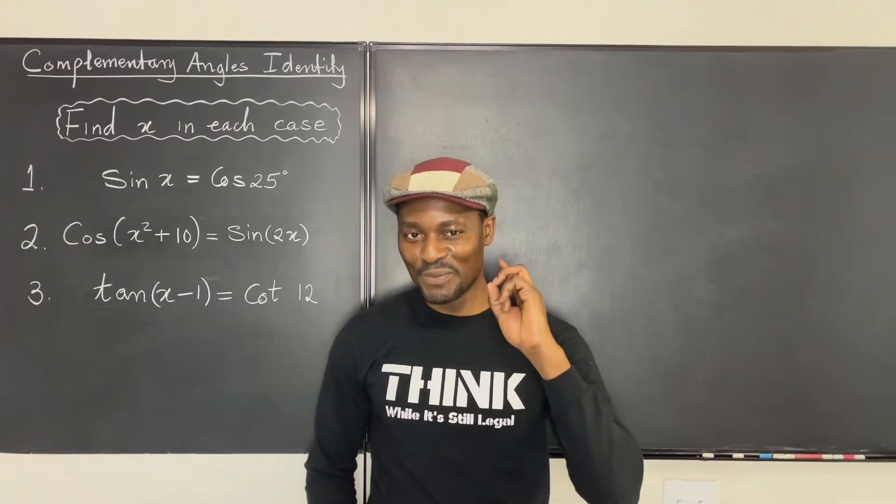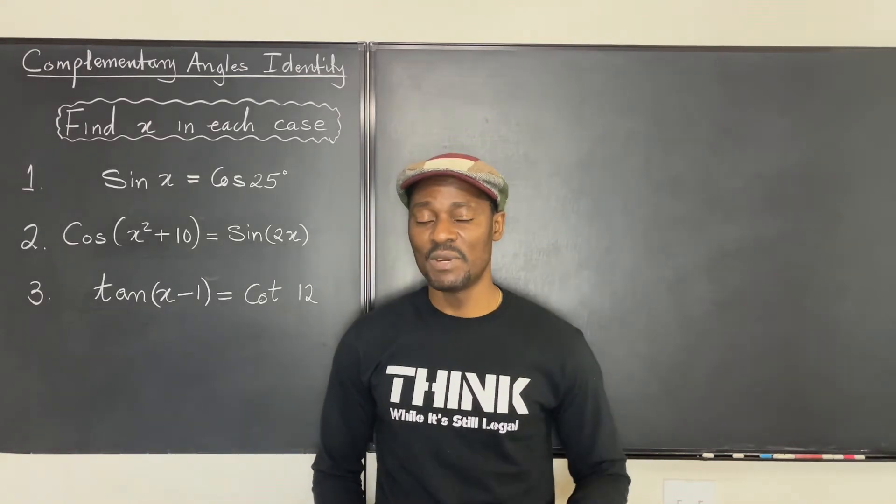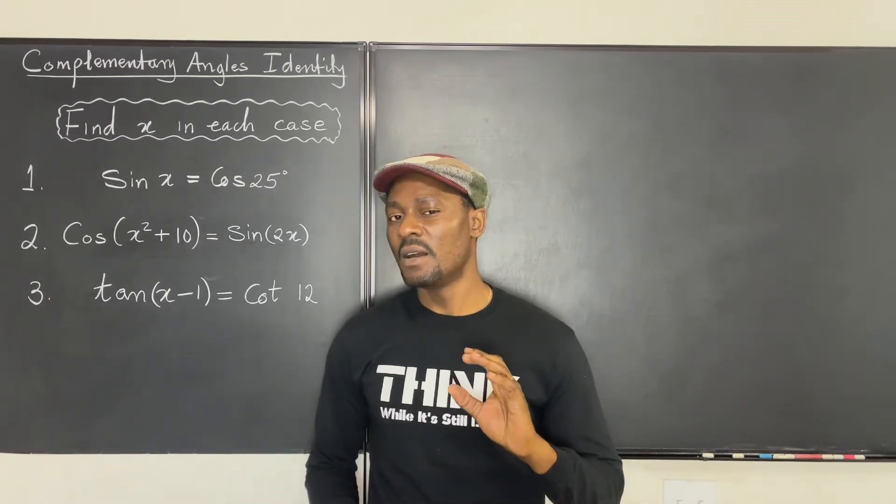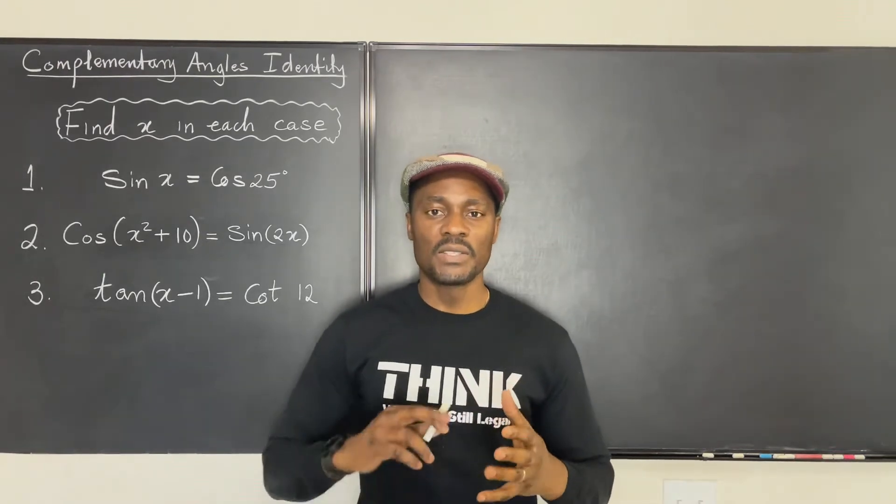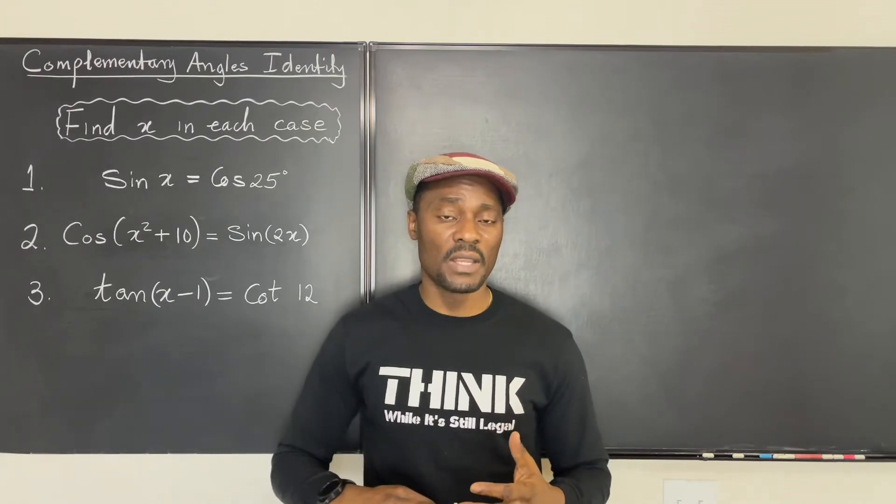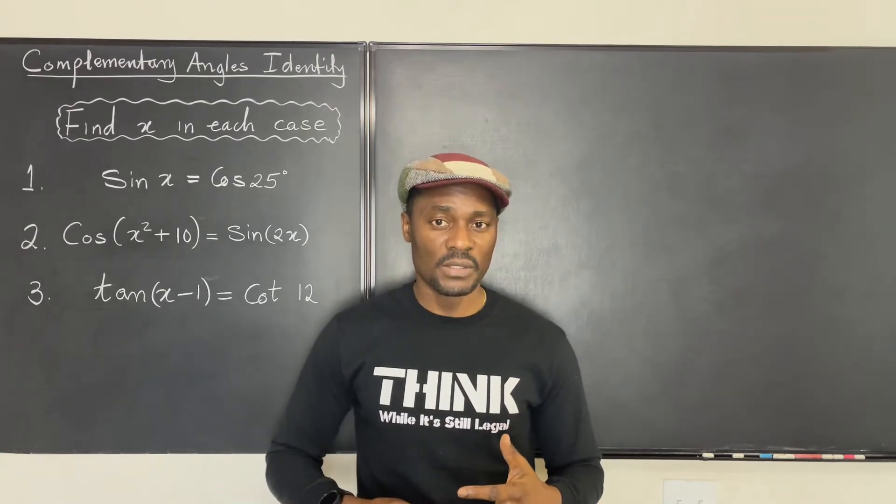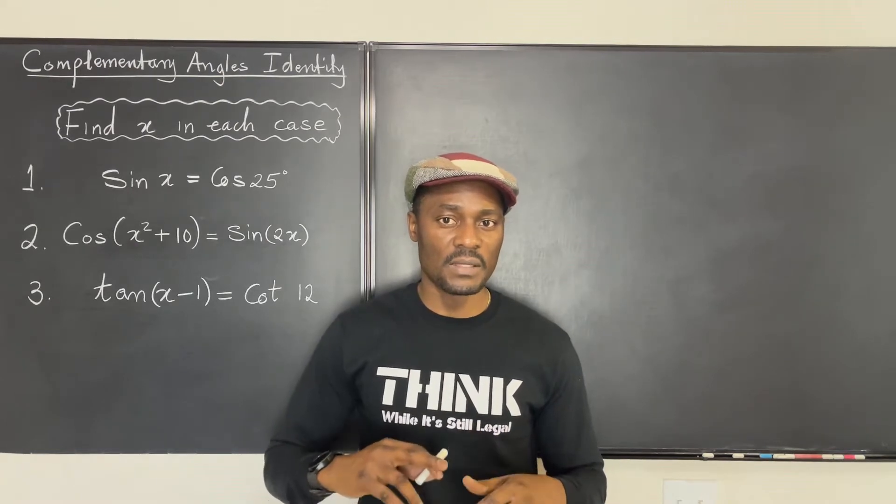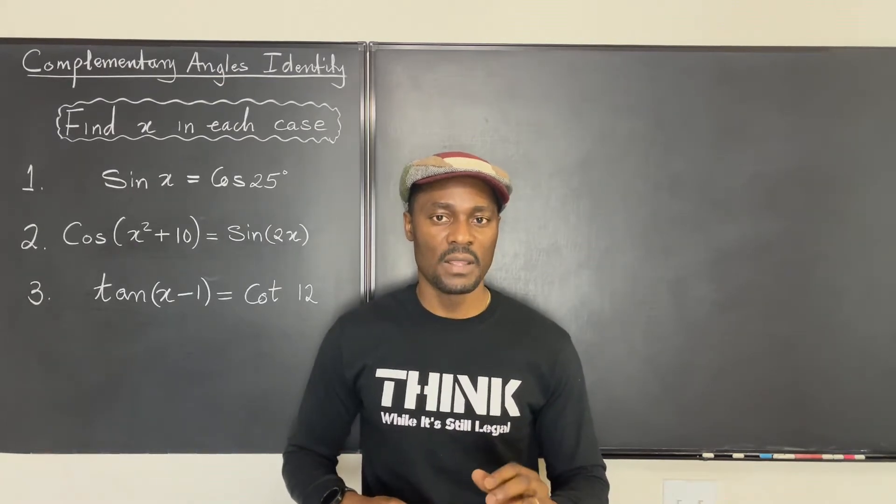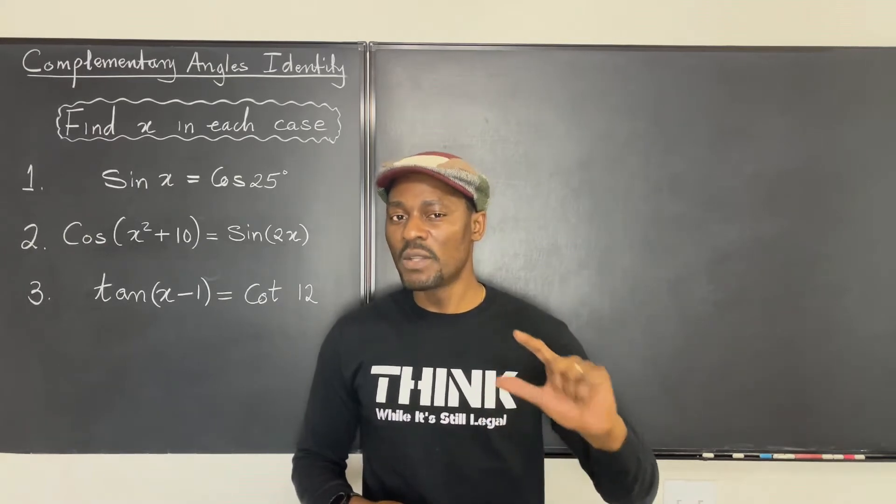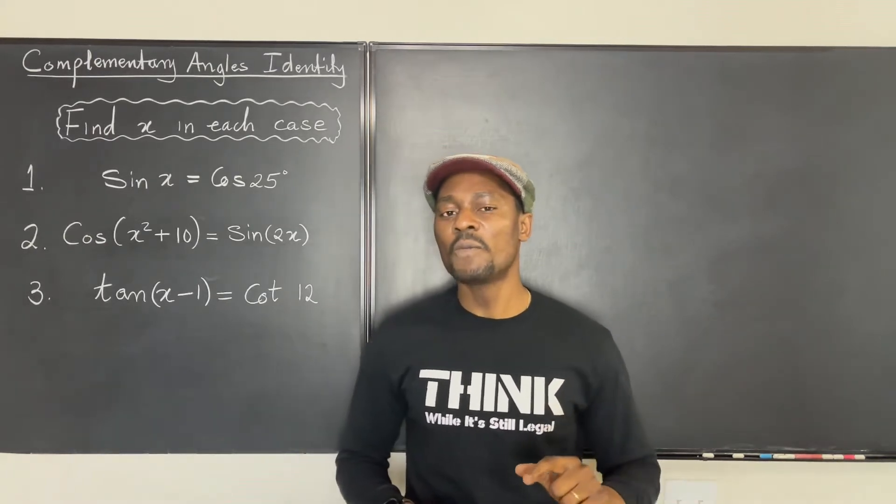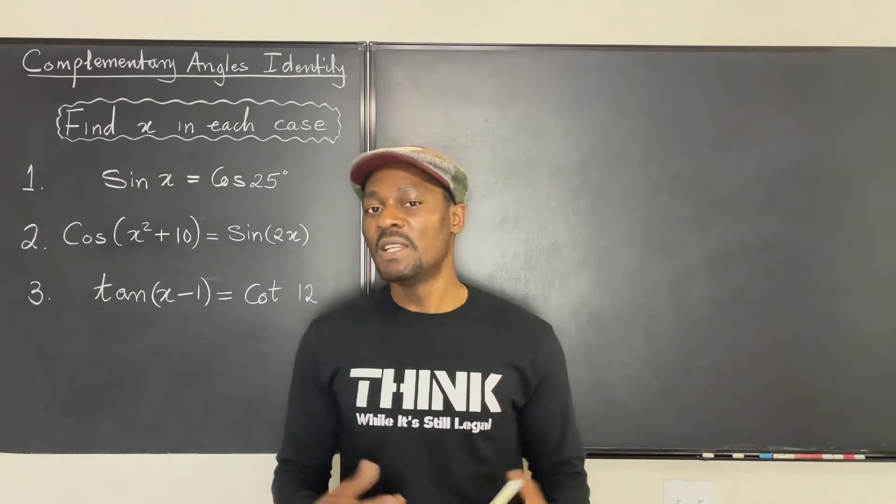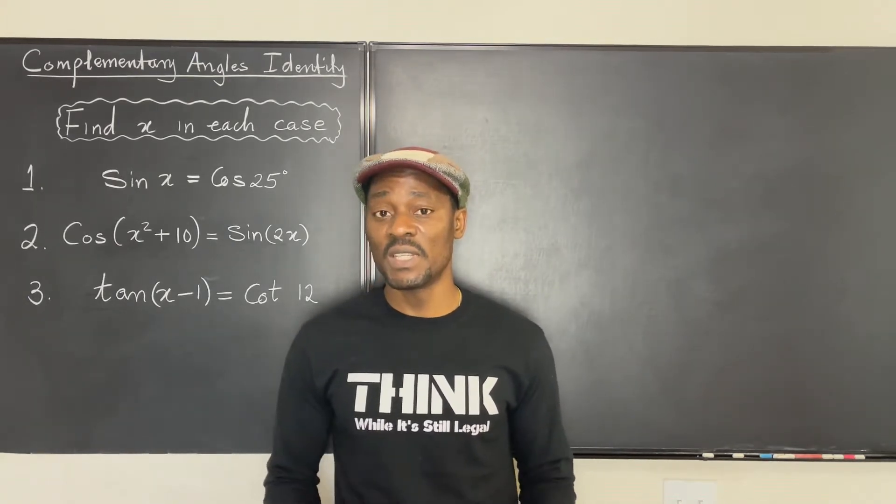Hello, welcome to video number two in this series for trigonometry. In the previous video I focused on the six basic trigonometric functions: sine, cosine, tangent, cosecant, secant, and cotangent. In this video we're going to go one step further because we want to know if there's any special relationship between any of those trig ratios depending on the type of angles that you're dealing with.